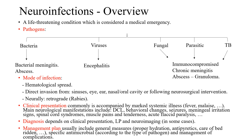Generally, the clinical presentation of a patient with neuroinfection: the patient is usually critically ill and should have marked systemic illness such as fever and malaise. They may show neurological manifestations including disturbed conscious level, behavioural changes, seizures, meningeal irritation signs, spinal cord syndromes, muscle pains and tenderness. Acute flaccid paralysis is also a manifestation of neuroinfection.